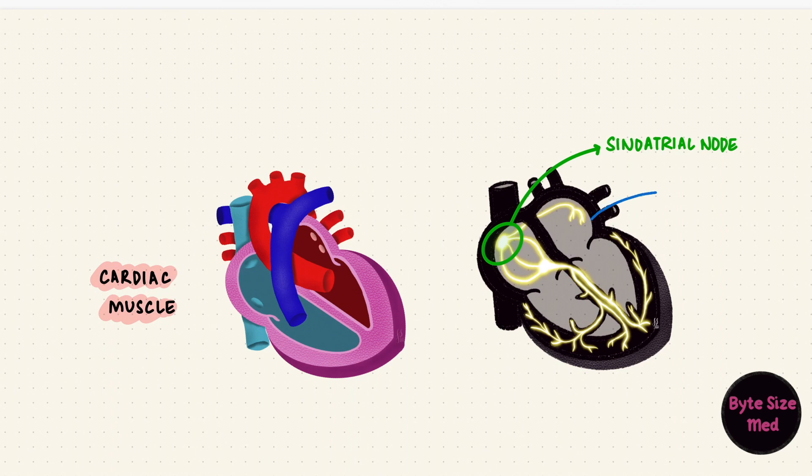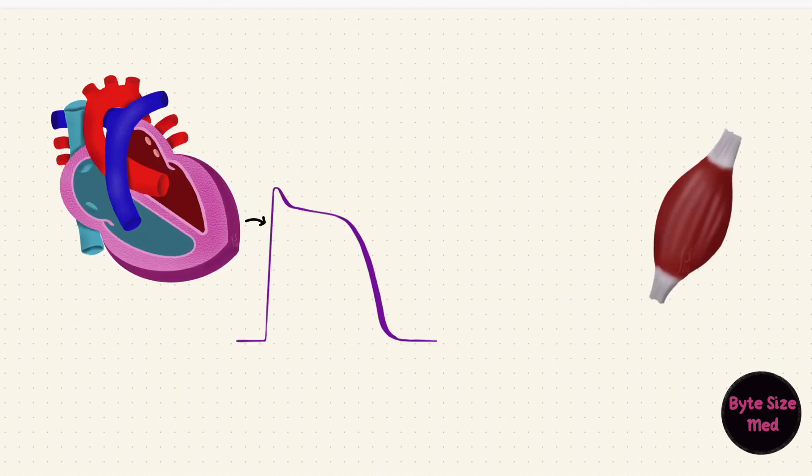That generates an action potential in the atrial and ventricular muscle fibers. The action potential in the contractile cells is different than in skeletal muscle. There's a plateau during which calcium enters the cell.